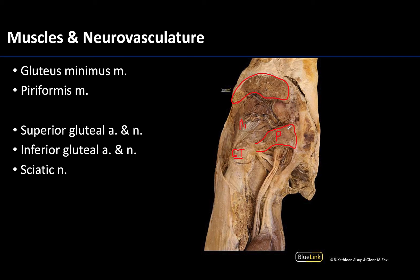There are also some smaller lateral rotators in this region. Some are quite small, while the quadratus femoris — which is right here — is slightly larger. You don't have to individually identify all of these, but they are clearly visible in this deep dissection, and they are lateral rotators of the hip joint.